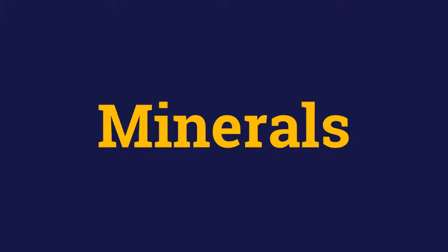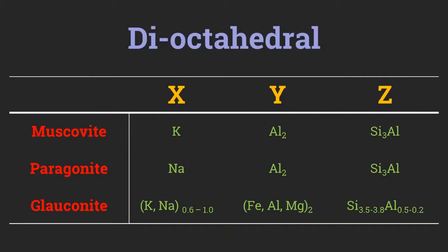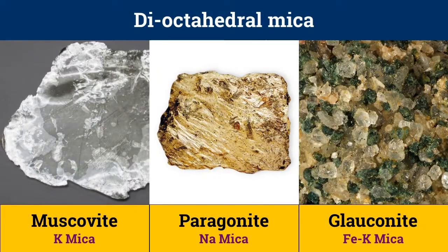The mica minerals can be classified as dioctahedral or trioctahedral. Dioctahedral minerals have two Y ions in their chemical composition. Dioctahedral micas include muscovite, paragonite, and glauconite. Notice in their chemical composition the Y ions are two in number — for example, two aluminium atoms per formula unit in muscovite and paragonite, and two iron-aluminium-magnesium ions per formula unit in glauconite.